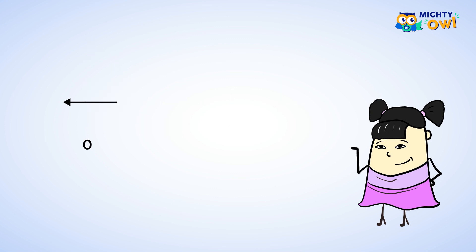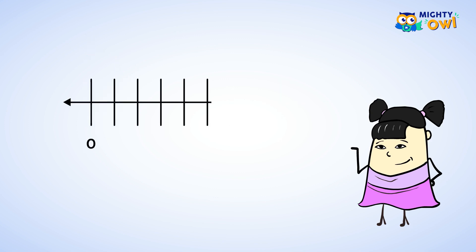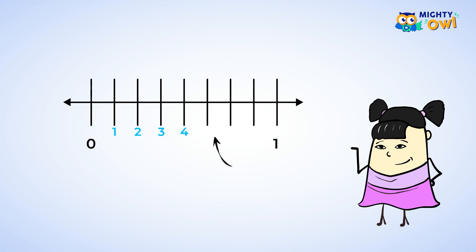Let's look at a new fraction. Now let's see how many parts the number line is split up into. There are 8 sections, so each section is 1 eighth.